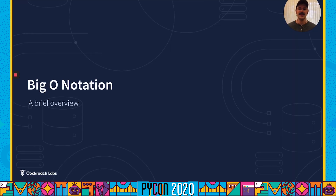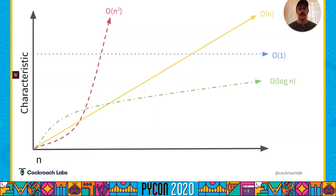Back to the namesake of this talk, we're going to do a quick overview of what Big O notation is. Big O is a way to describe the relationship between a certain characteristic of a function and some number n as n approaches infinity. Generally speaking, the characteristic we're going to be tracking is the runtime of a function, and n is going to be a dataset that is being operated on.